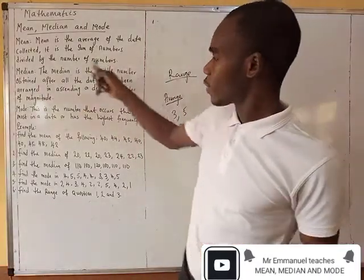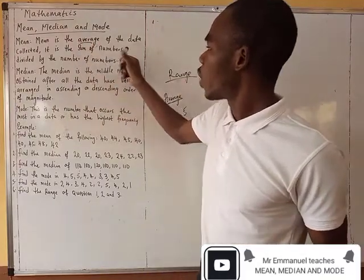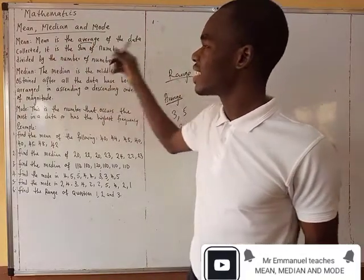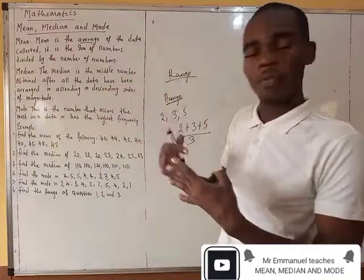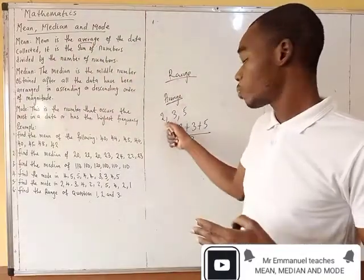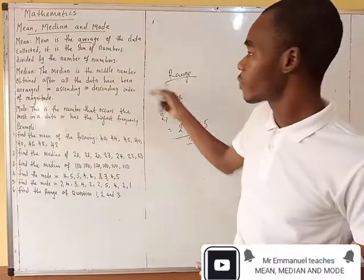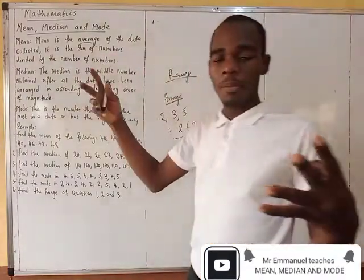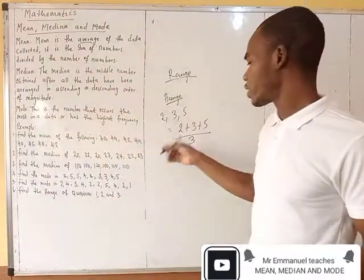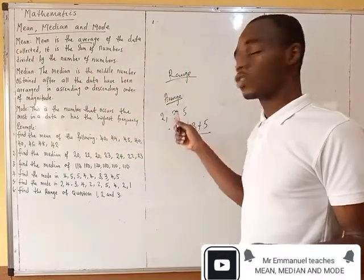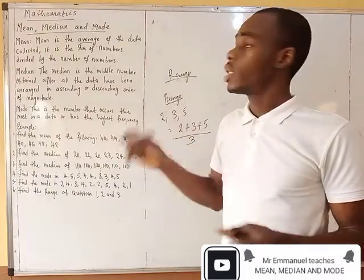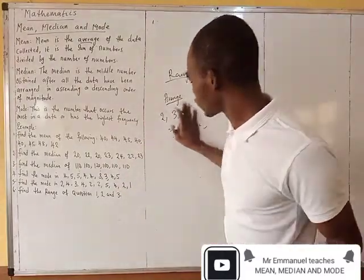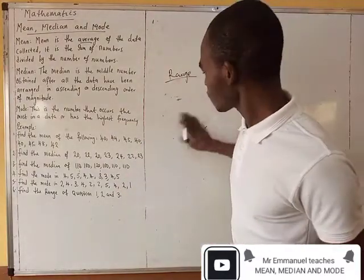As I said, mean is the average of the data collected. It is the sum of the numbers — 2 plus 3 plus 5 — divided by the number of numbers. How many are you? 1, 2, 3. Now, that is what mean actually implies. So, that is number one.